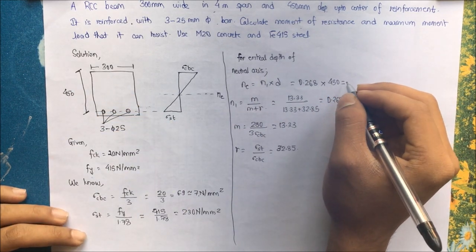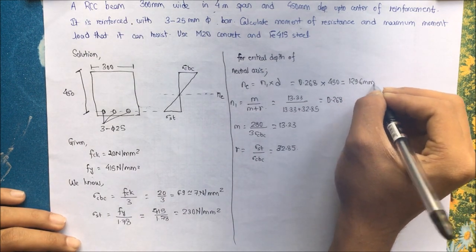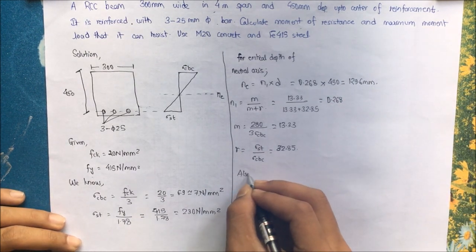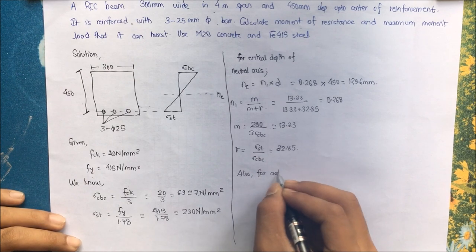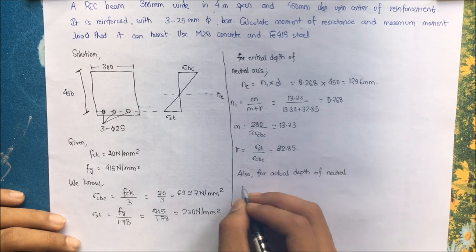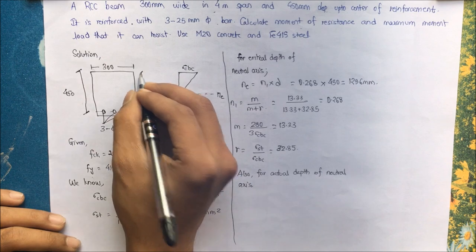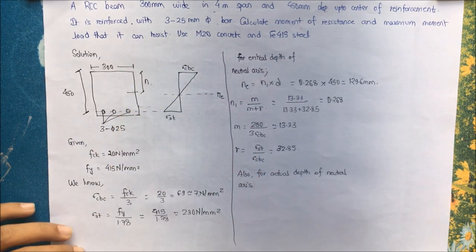Then 13.33 divided by 13.33 plus 32.85, we get this value as 0.289, and finally this as 0.289 into 450 depth. So we get this value as 129.6mm. Also for actual depth of neutral axis, because we will consider actual depth of neutral axis for the calculation of moment of resistance, this being the actual depth of neutral axis.